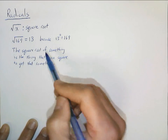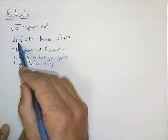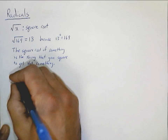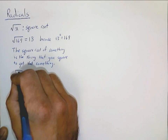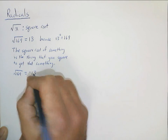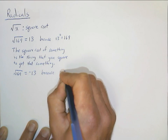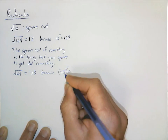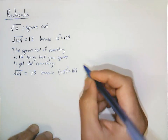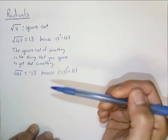Basically, the square root of something is the thing that, when you square it, you get that something. The square root of 169 is 13 because 13 squared equals 169. But this gets a little goofy here, because the square root of 169 — given this definition — we could also say is negative 13, because negative 13 times negative 13 is again 169. So most things have two square roots: the positive one and the negative one.